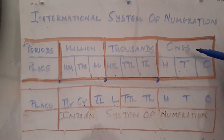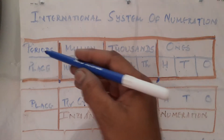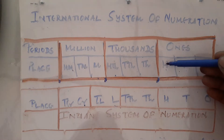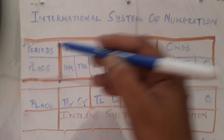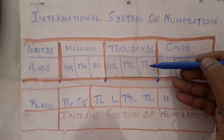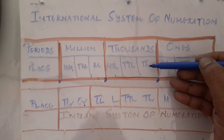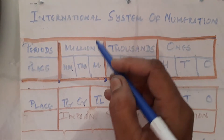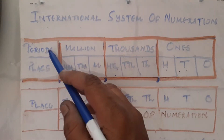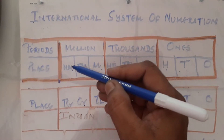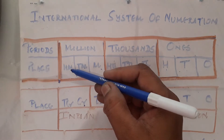Observe the chart. The 1s period is a combination of 1s, 10s, and 100s. The 1000s period is a combination of 3 digits, that is 1000, 10,000, and 100,000.